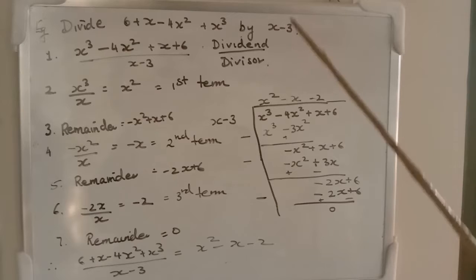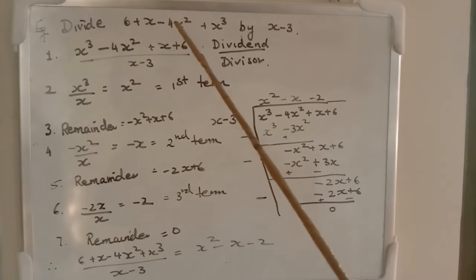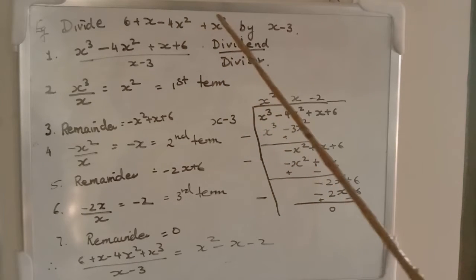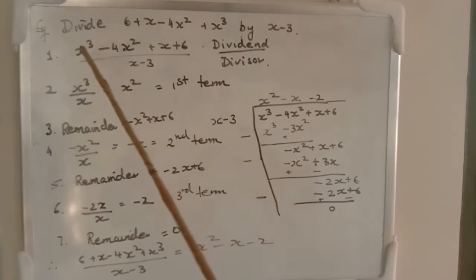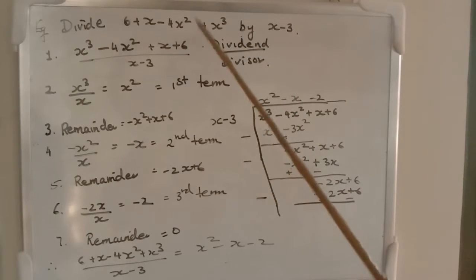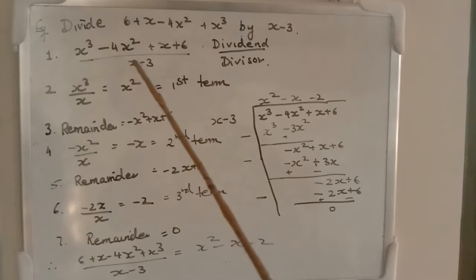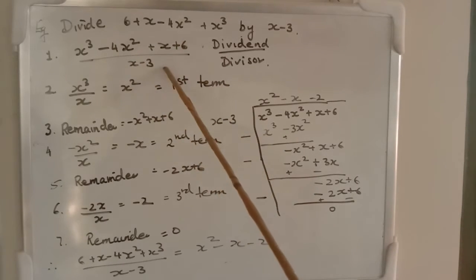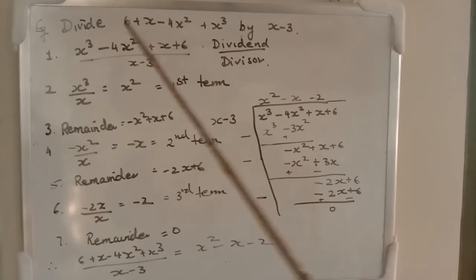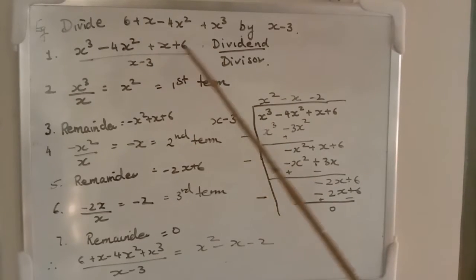In this case, first we will rearrange in descending order of the degrees. So, here who is the highest? 3. Then 2, 1, 0. So, x³ - 4x² + x + 6. Here, it's x - 3. So, up is the dividend, down, it's called the divisor.